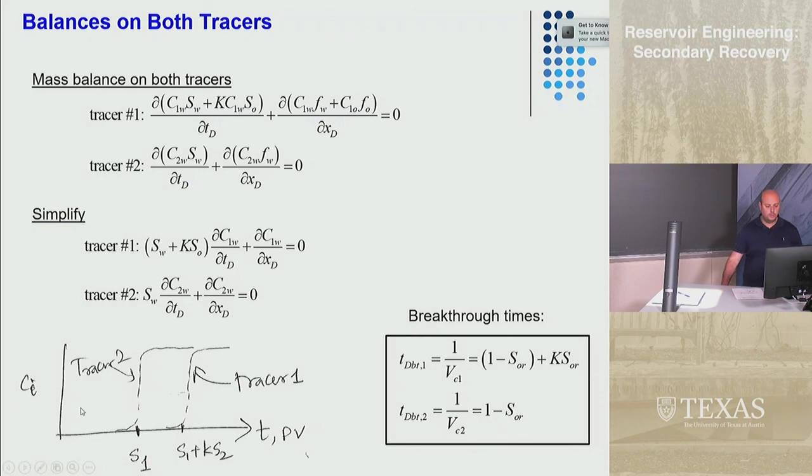What that would look like is if you measure the concentration of your two tracers at the producer well, then tracer number two would come out and tracer number one would come out at a different time.